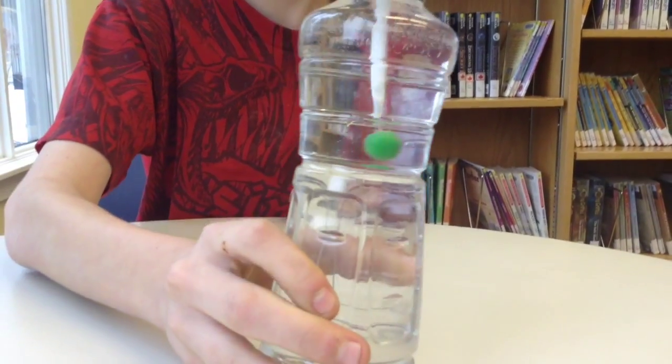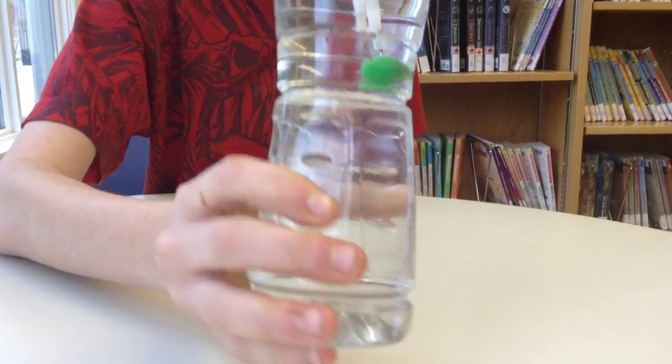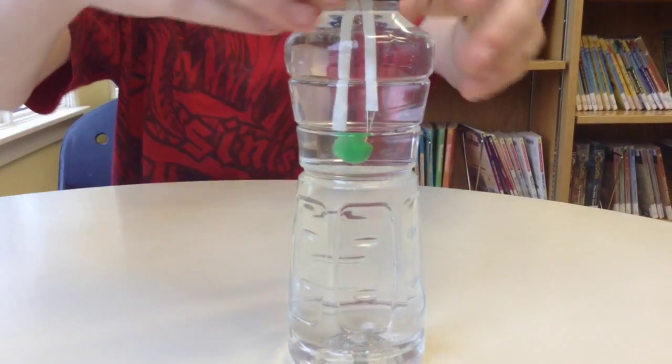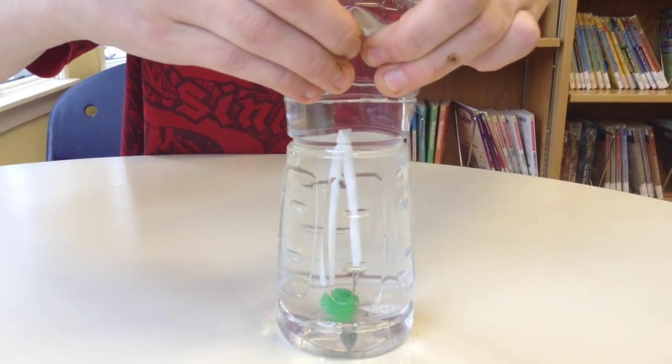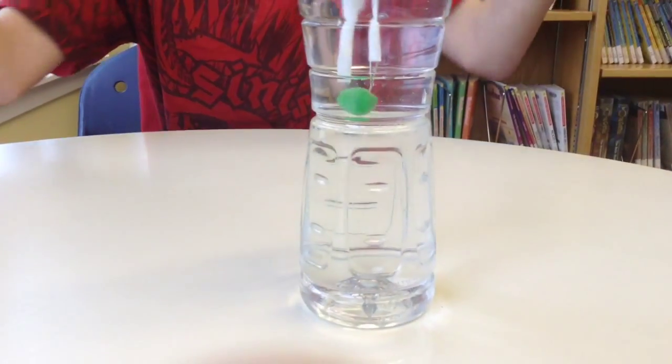So, now you have your submarine in a bottle. But what do you actually do with it? Well, take the bottle and squeeze it, and it lowers all the way to the bottom of the glass. Then when you release it, it comes all the way back up.